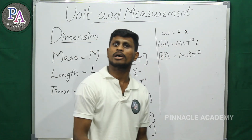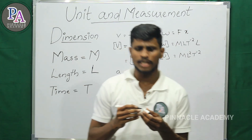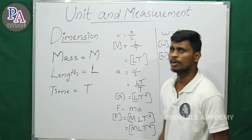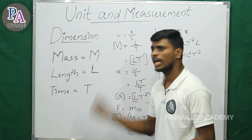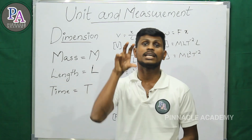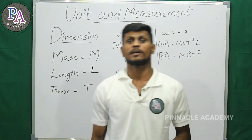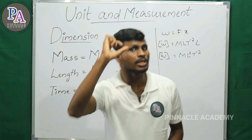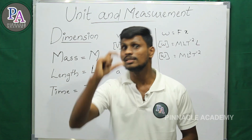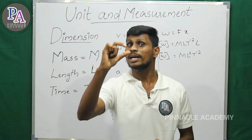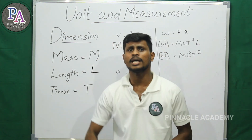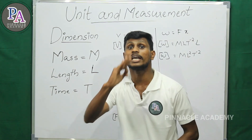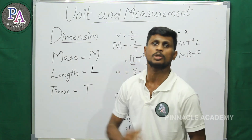The dimension of work is M L T raised to minus 2 times L, which equals M L squared T raised to minus 2. We express physical quantities in terms of the fundamental quantities: mass, length, and time.